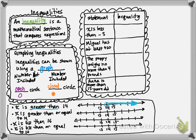So how does the graph change when we make it greater than or equal to? We're still going to go to the right because that's where the greater numbers are, but it says or equal to, so at 14 I'm going to do a closed circle and then color to the right. If I have a greater than or a greater than or equal to, I'm going to color to the right.